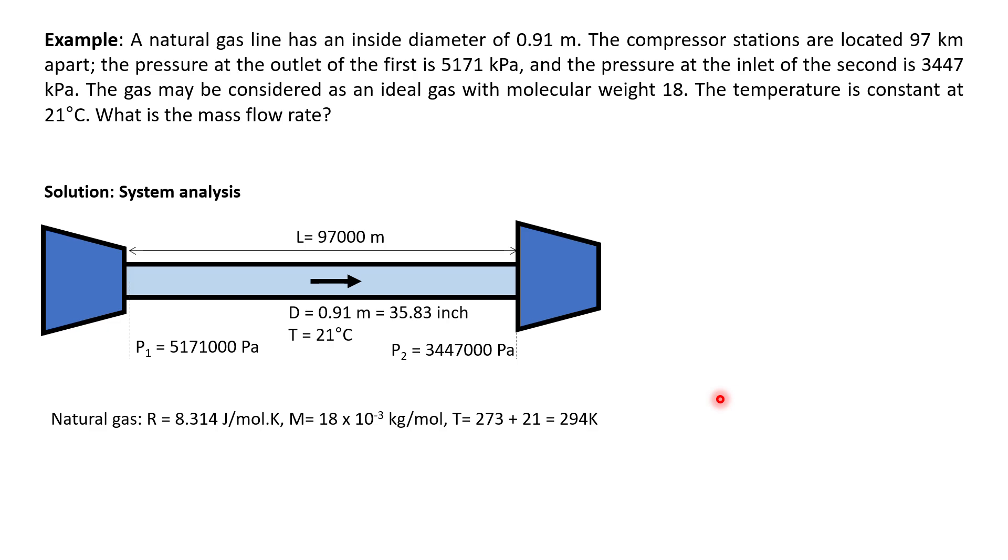So first we need to do the system analysis. This is what it means. We have two compressors. This is compressor 1. This is compressor 2. You are given a diameter of 0.91 meter, so this is equal to 35.83 inch. This is the diameter of the pipe.